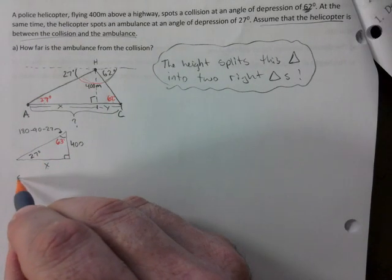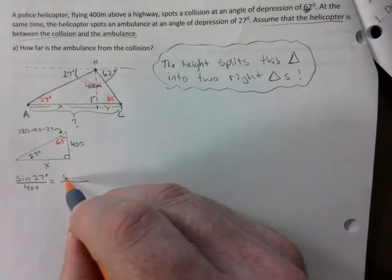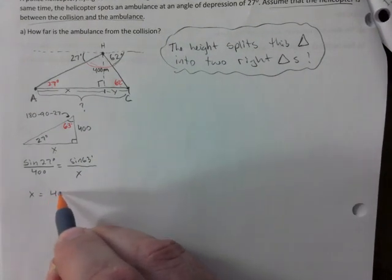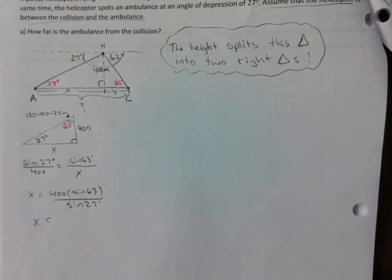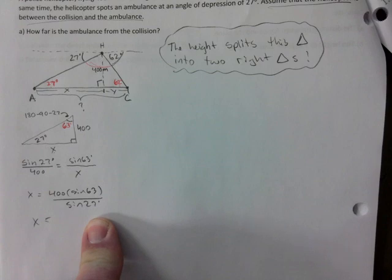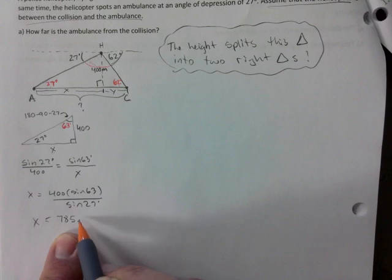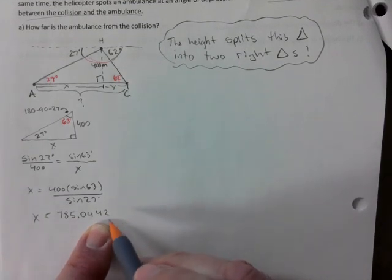So now you can use sine law. Sine of 27 degrees over 400 is equal to sine of 63 which is going to be over x. And now you solve. So this is 785, and I'm going to round it to four decimals because it's not my final answer yet. We are in meters here.